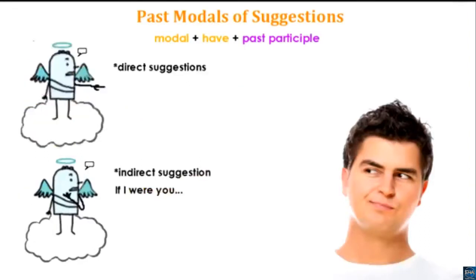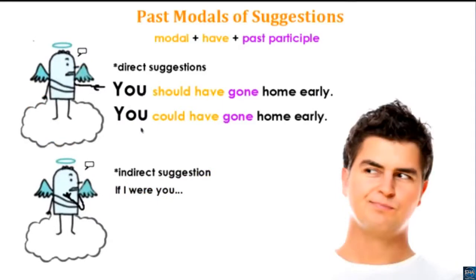If giving a direct suggestion, say: 'You should have gone home early' or 'You could have gone home early.' So when I say 'you should have,' I could also say 'he should have' or 'she should have.' The same applies to 'could have.' These are direct suggestions for that person.